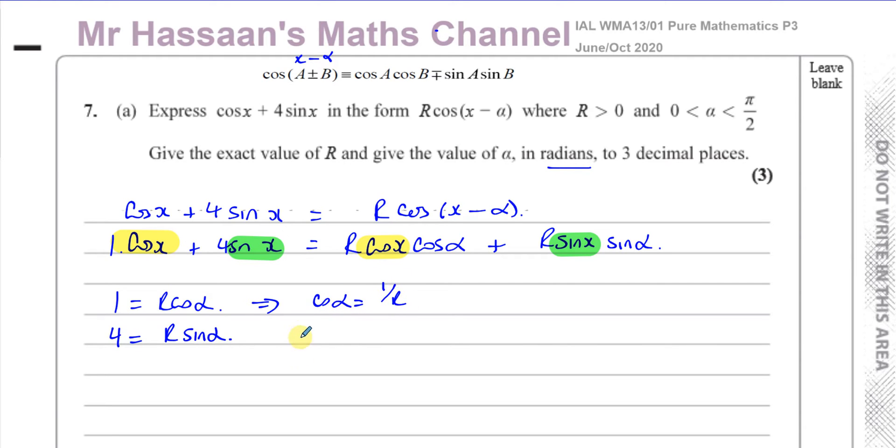So I can make myself a right angle triangle. I can call this alpha. I know the sine of alpha is opposite over hypotenuse, so that's going to be four and that's going to be r. The cosine alpha is adjacent over hypotenuse, so this is going to be one and that's going to be r. I can work out what r is using Pythagoras: r is equal to the square root of four squared plus one squared, so r is going to be the square root of 17, and that's how I have to give it in exact form.